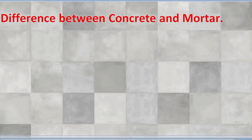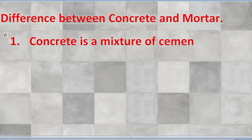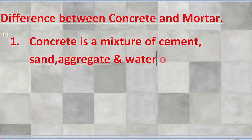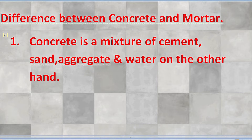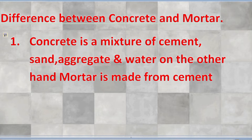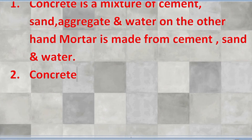Mortar is made from a mixture of cement, sand, and water. The difference between mortar and concrete: concrete is a mixture of cement, sand, aggregate, and water; on the other hand, mortar is made from cement, sand, and water. Concrete is much stronger than mortar.